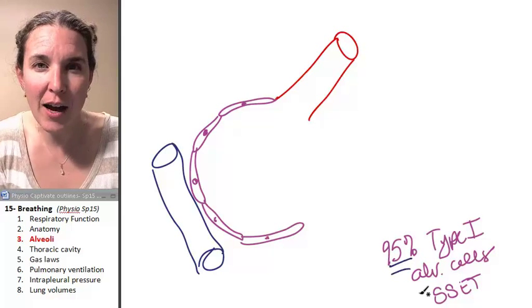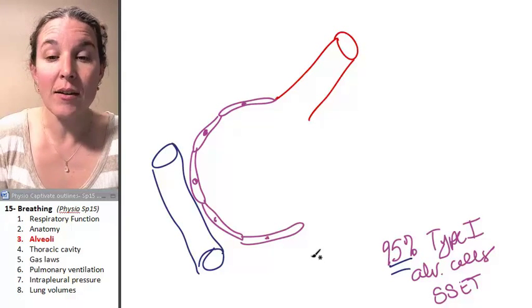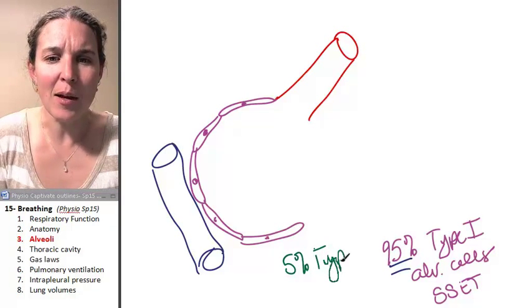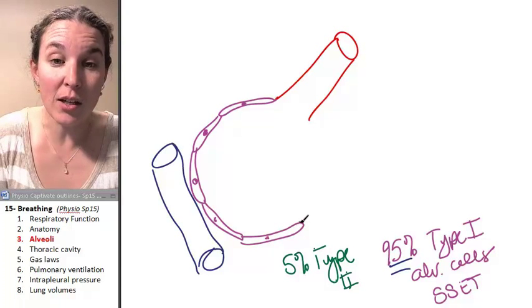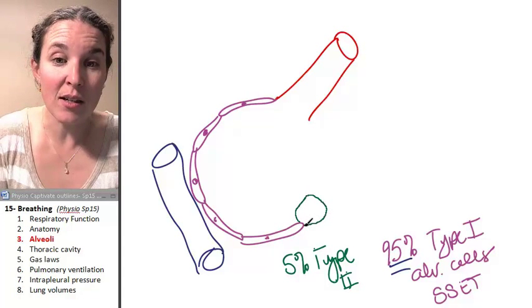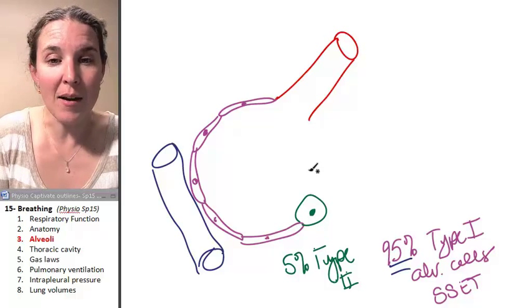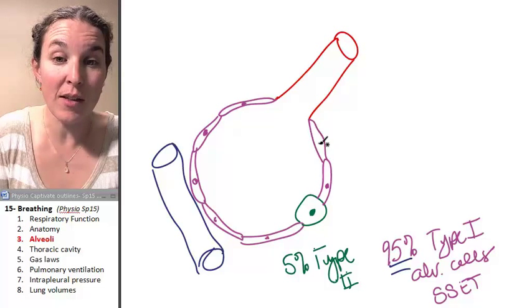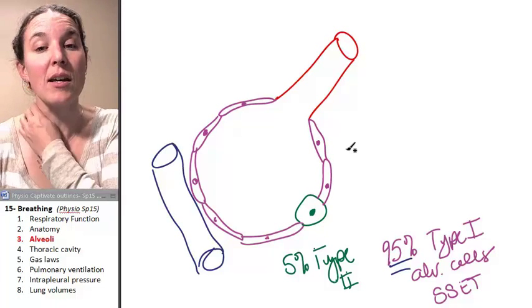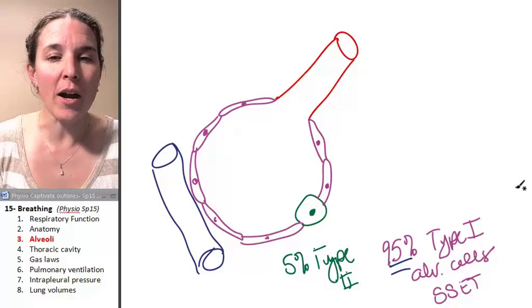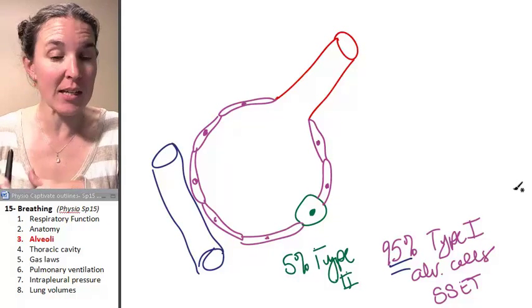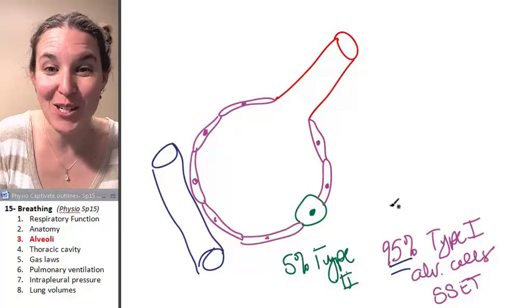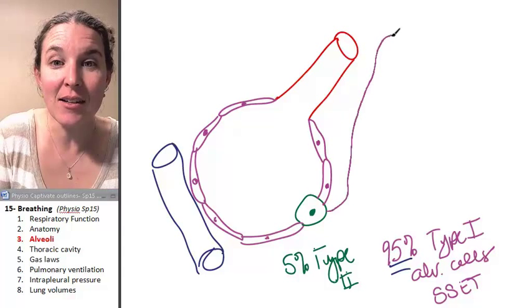If 95% of them are type 1, what's the other 5%? You're so good. They're type 2. And look, the type 2 cells are different. I'm going to go back and I'm going to finish my type 1s so that you can see that most of them are definitely type 1s, but the type 2s, oh, my gosh. The function of the type 1s is just to allow exchange of gases. Done. The function of the type 2s, these guys are rock stars.